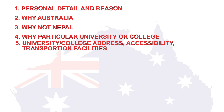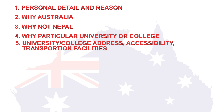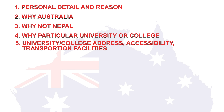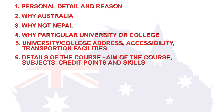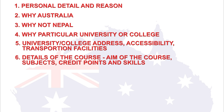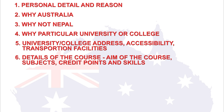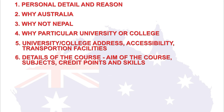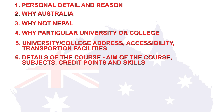Point number five, mention the address of the college — how easy is it to reach and does the area have good transport facilities. Point number six, give detailed and thorough information about your chosen course, like what are the aims of the course, what subjects are taught, how many credit points do you have to complete, and what skills do you get when you graduate.